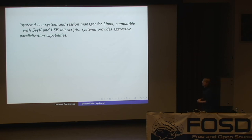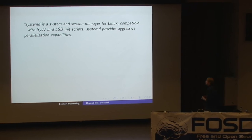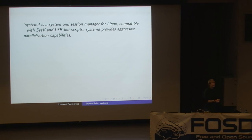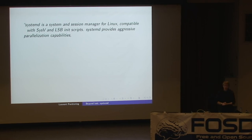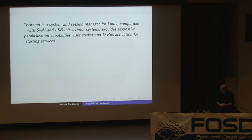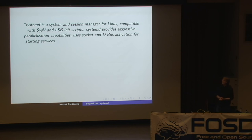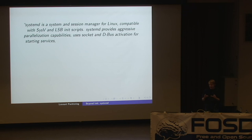System D provides aggressive parallelization capabilities. Parallelization — many have quite an idea what that is. What that means in an init system context is basically that we start everything in parallel. The word 'aggressive' here means it's probably a little bit beyond what existing init systems do, and in a later slide we'll go into detail on what precisely this kind of aggressive parallelization means. It uses socket and D-Bus activation for starting services — which will be understandable after the further slides — meaning we can start services if something happens on a network socket, or if somebody requires a D-Bus service.